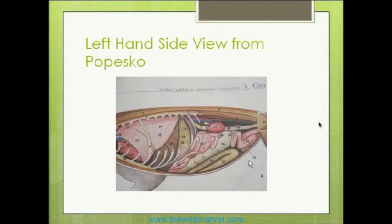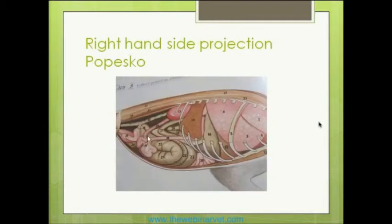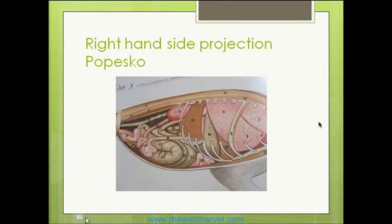Here you can see the cecum, with the small intestine and large intestine going around and down. On this side is the other part of the cecum. Unusually compared with most species, part of the gut actually spans almost both sides of the abdomen. When it's full, you should be able to feel it on palpation. When it's empty — for whatever reason — the abdomen becomes very tucked up and thin very rapidly, particularly if motility has been abnormal and emptying has occurred without refilling.